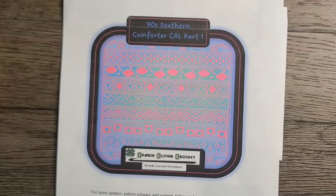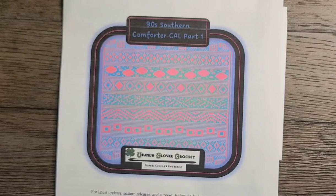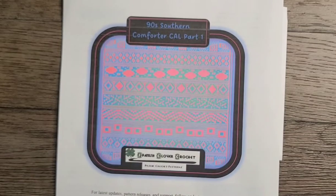Hello, this is the companion video to the negative stitch for the 90s Southern Comforter cowl part one.